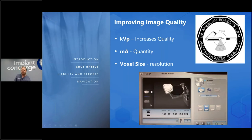If you're just thinking of a PA and these numbers are all over the place, it doesn't matter. If it's digital, you can go to the computer, adjust the contrast, adjust the brightness, and the image is still going to be diagnostic. You're still going to be able to see those E1s and E2s. With cone beam CT, though, it's different.